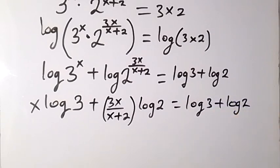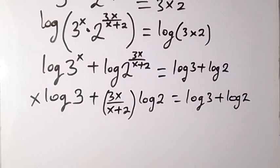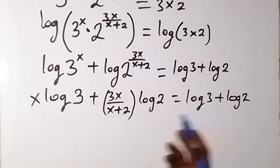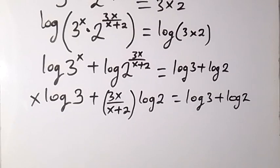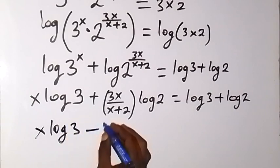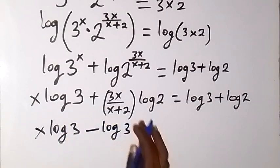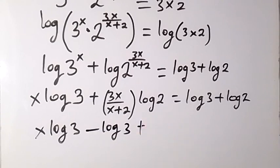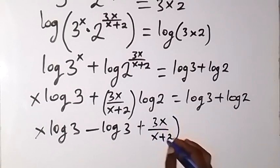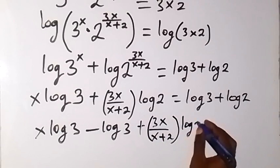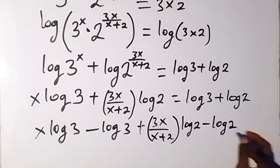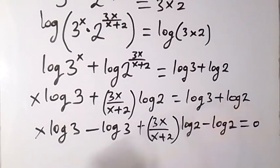We can collect like terms by bringing log 3 with log 3 and log 2 with log 2. Let's bring everything to one side so we have: x log 3 minus log 3 plus 3x over x plus 2 times log 2, then minus log 2, equals 0. We are taking everything to this side.